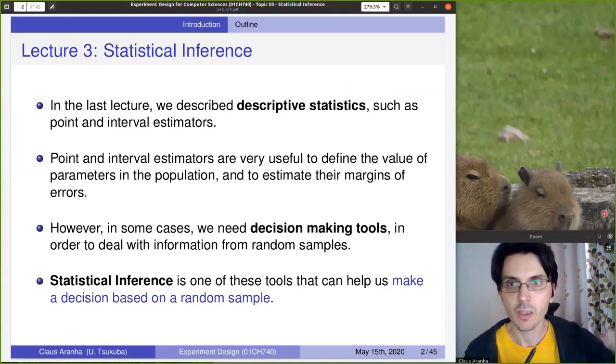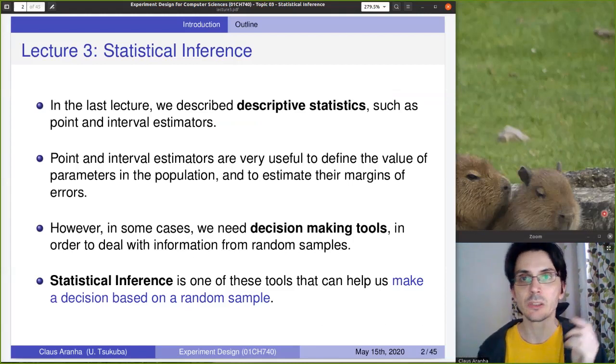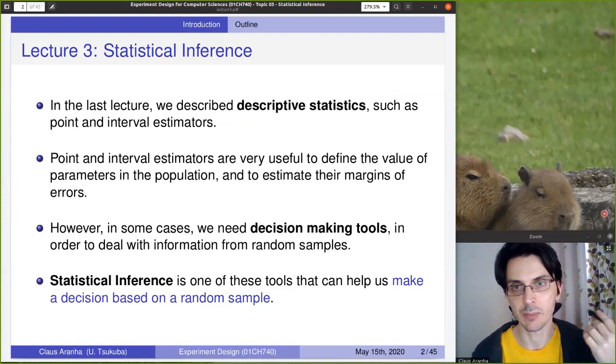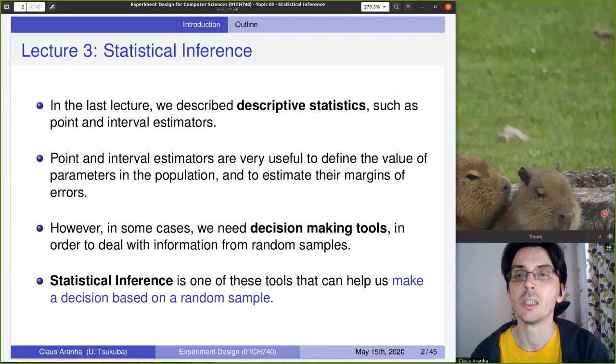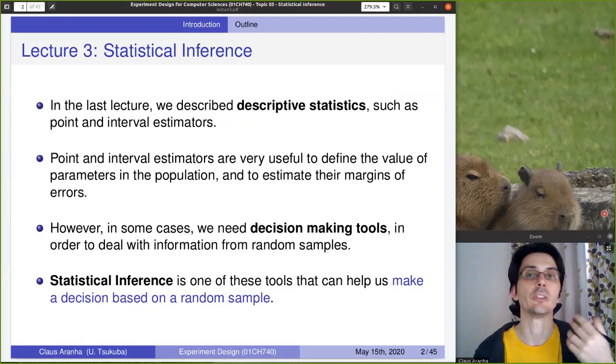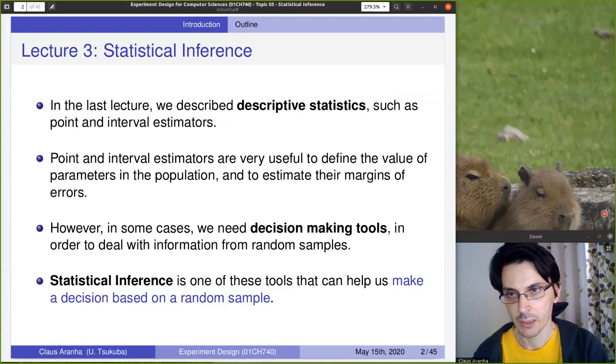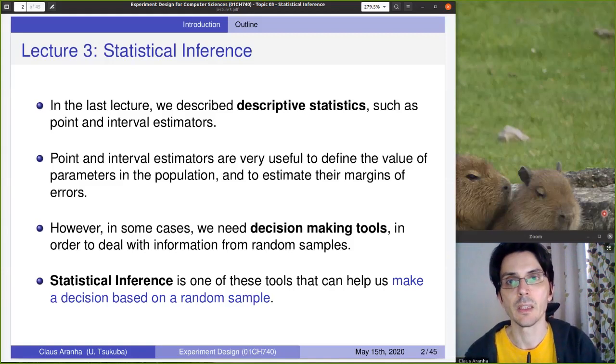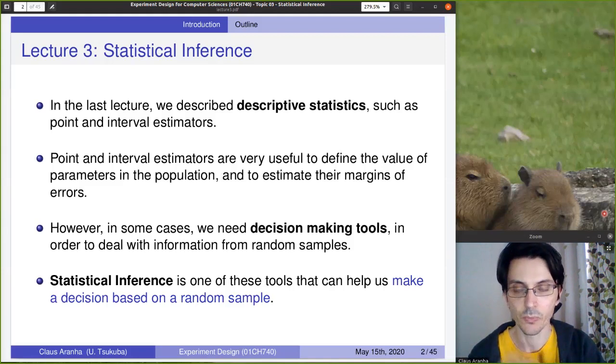So let's go. In the last lecture, we talked about descriptive statistics. So we talked about using the mean of the sample as an estimate for the mean of the population, the variance of the sample as an estimate for the variance of the population. And we also talked about the confidence interval, which is an interval estimator. The point and the interval estimator are very useful to define the value of parameters in the population.